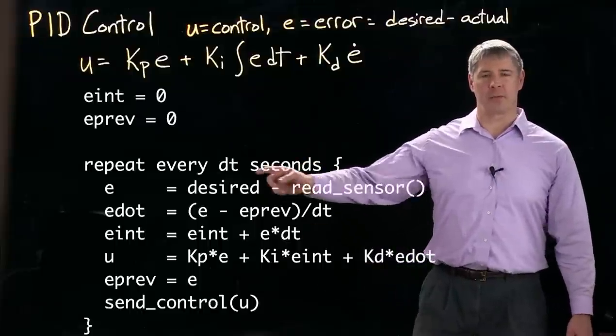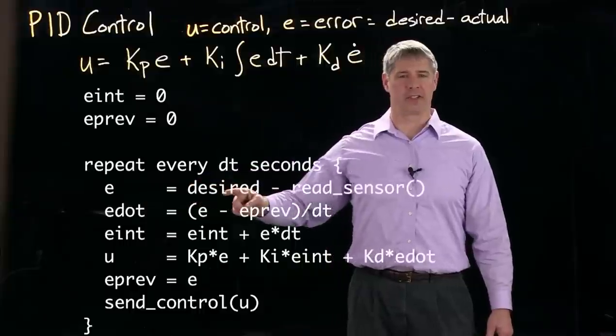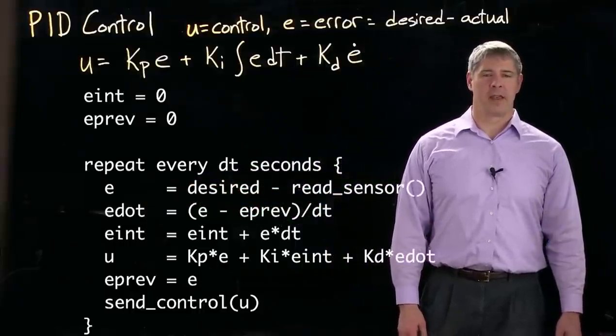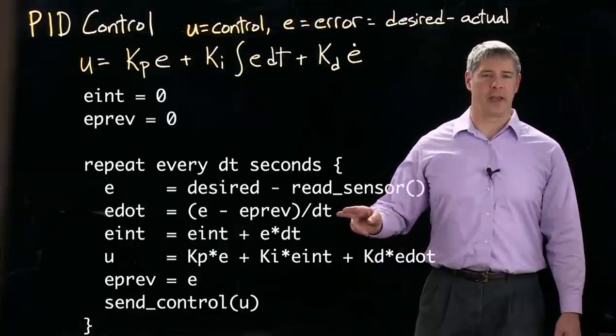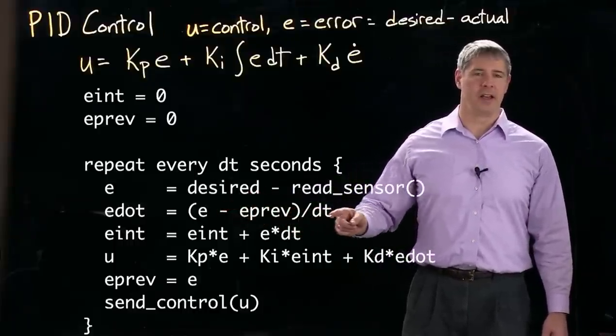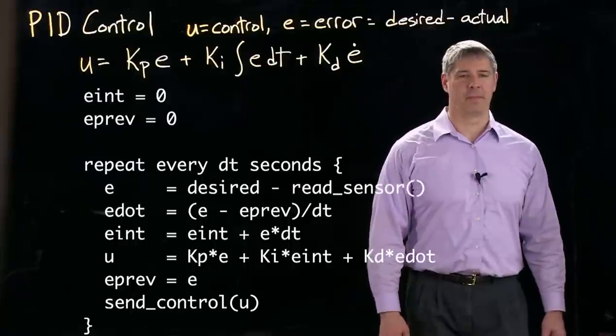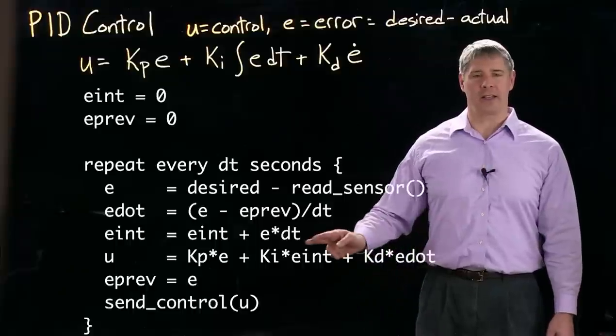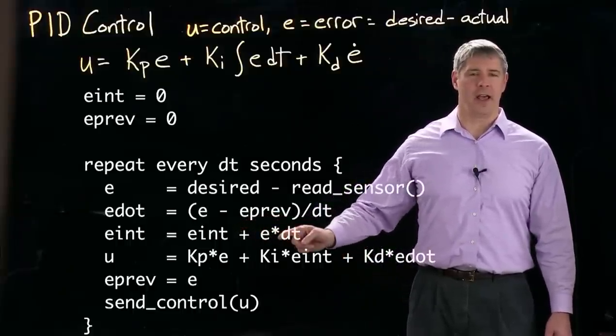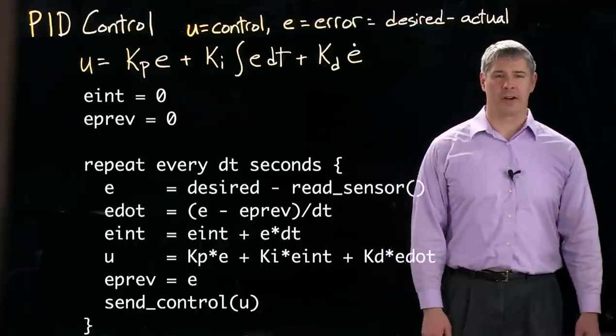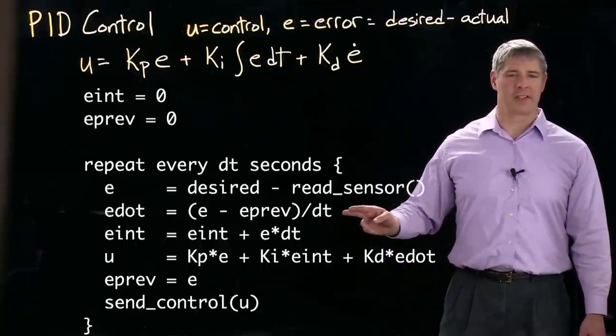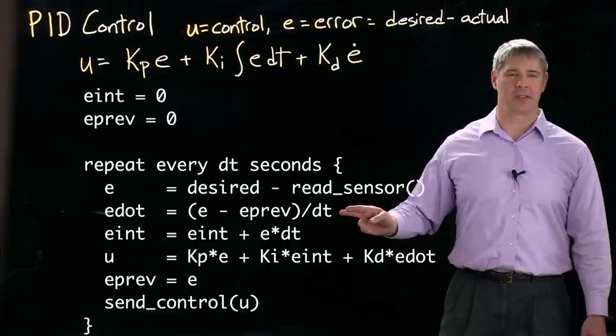So every one millisecond, we're going to go in and calculate the error, which is the desired position minus the position that we read from a sensor. Then we can calculate the derivative of the error by taking the current error, subtracting the previous error, and dividing by the time step. So now we've got e dot. And to calculate the integral of the error, we just take the previous integral of the error and add to it the current error times the time step dt. So this is a simple numerical integration scheme, simple numerical differentiation scheme.